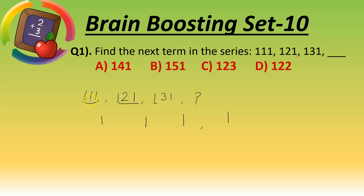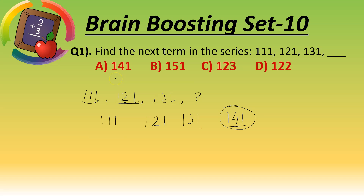In the first term, tens place number is one; second term tens place is two; third term tens place is three. So here: one, two, three — after one, two, three, the next is four. For the units place, it is one everywhere. So we write 1,4,1. Our answer is one four one.